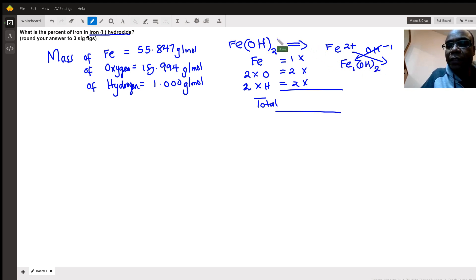This can be written as such. Now, because we are talking about the percent, what we can do is find the mass. So if you know the total mass of this formula, you just simply divide the mass of iron over the total mass times 100.